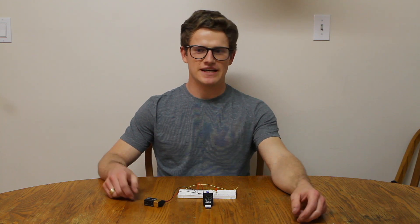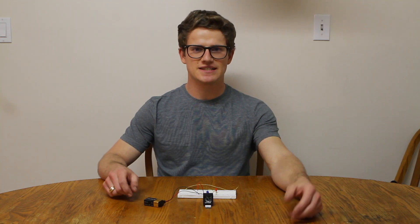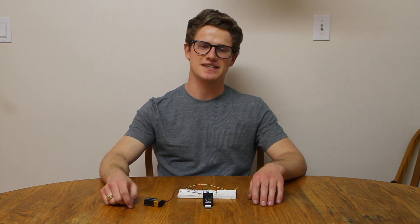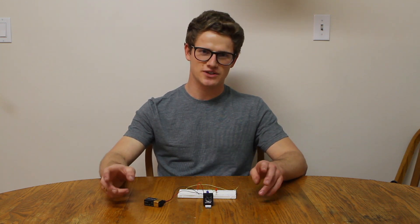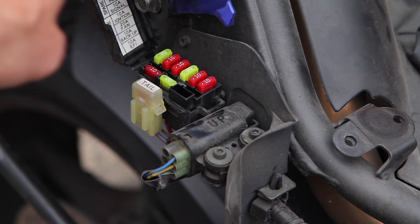You'd wire in a relay to your FZ6 to add auxiliary equipment like heated grips, auxiliary lights, or a phone charger. The purpose of an added relay on your FZ6 like this one here would be to give another circuit for your new device to draw current from so that you're not overloading an existing circuit on your motorcycle.